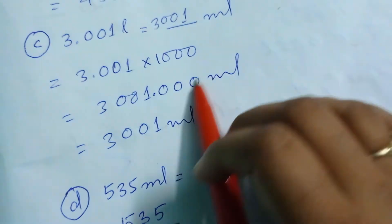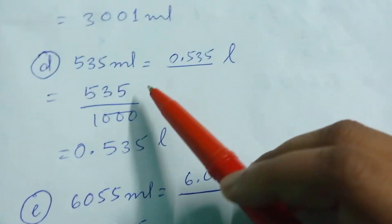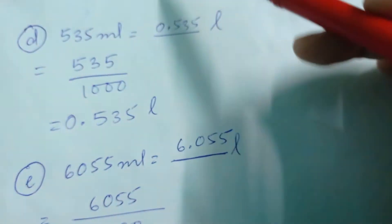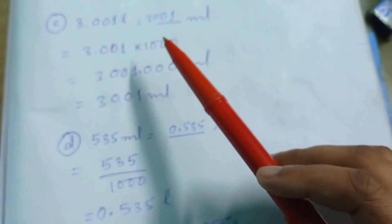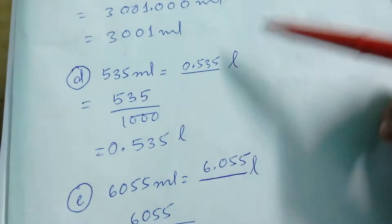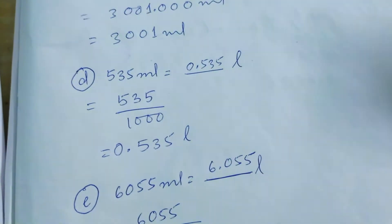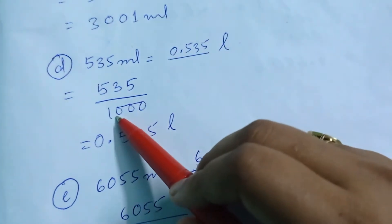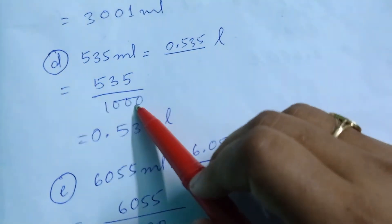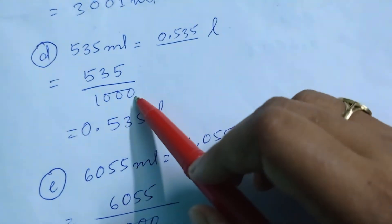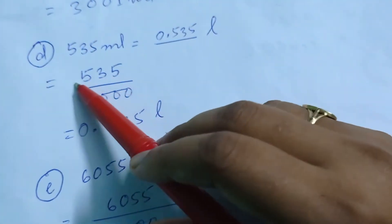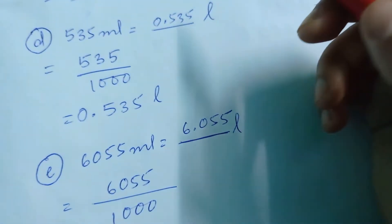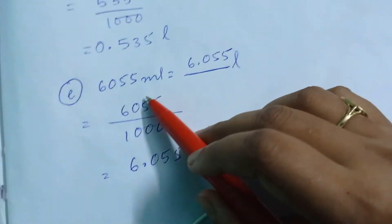Question D is the same type, but now the difference is you need to convert from milliliter to liter instead of liter to milliliter. From milliliter to liter, we divide by 1000. So 535 divided by 1000 — since there are three zeros, you put the point before three numbers from the right: 1, 2, 3 — giving 0.535 liter.